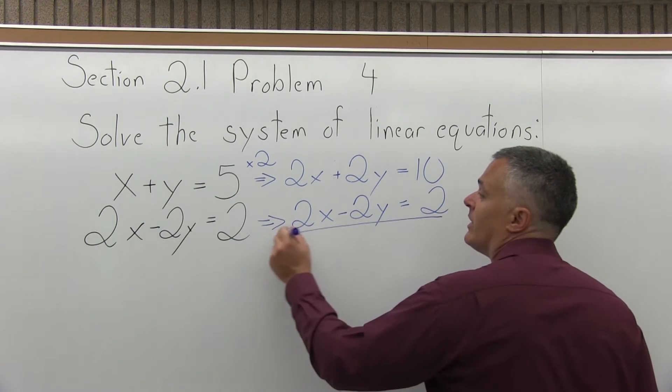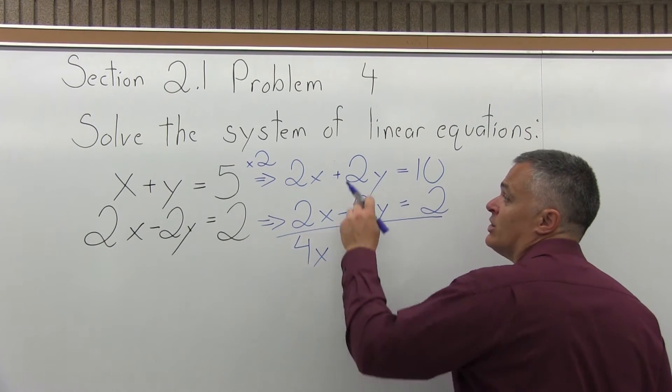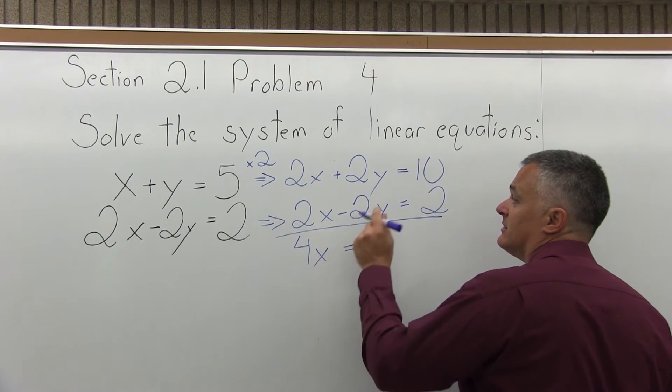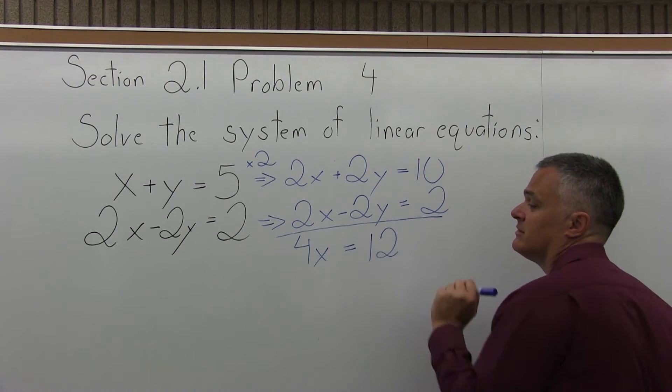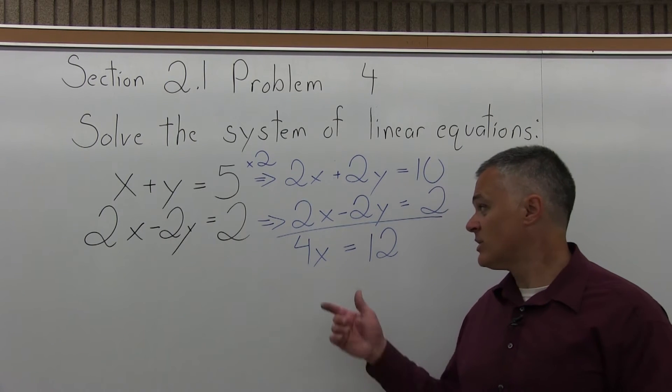So 2x plus another 2x will make 4x. 2y and negative 2y will cancel. Positive 10 and positive 2 will be 12. So that's step two. I added the equations together and I canceled one of the variables.